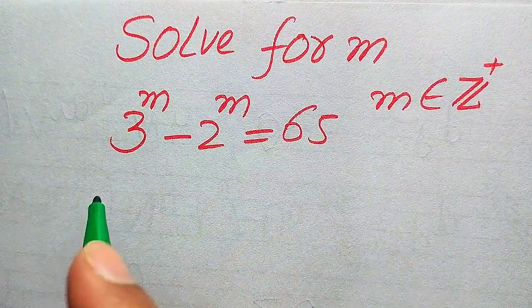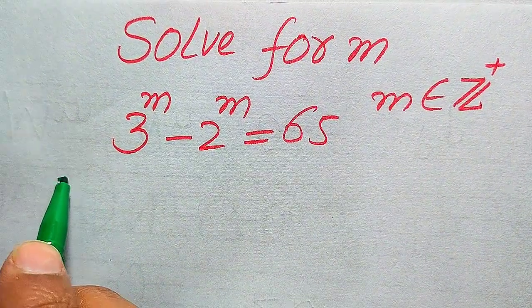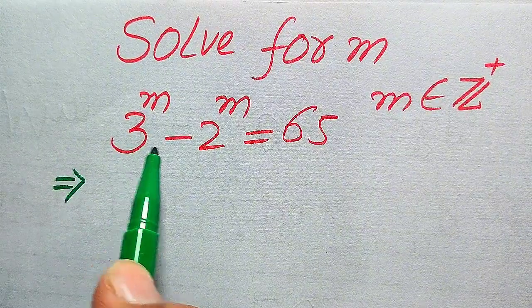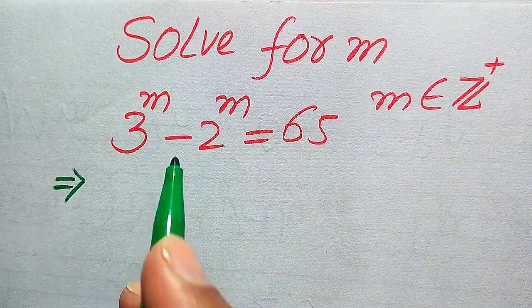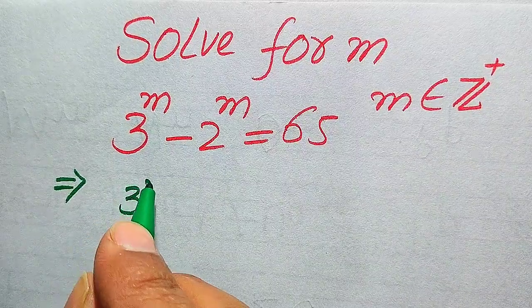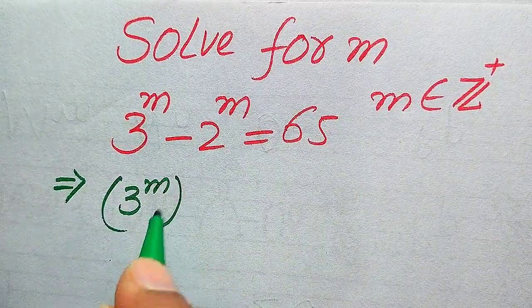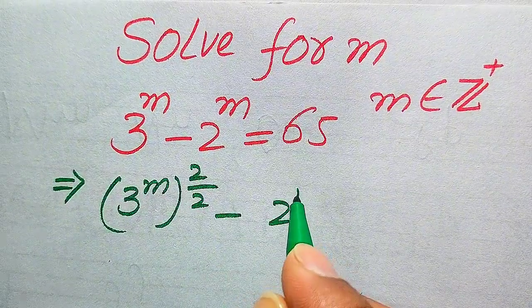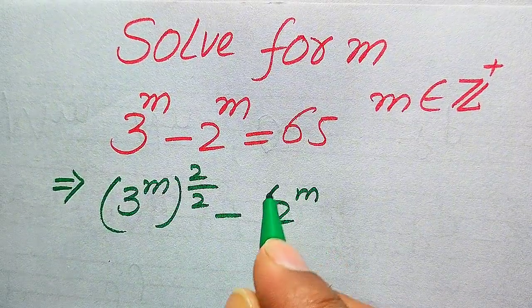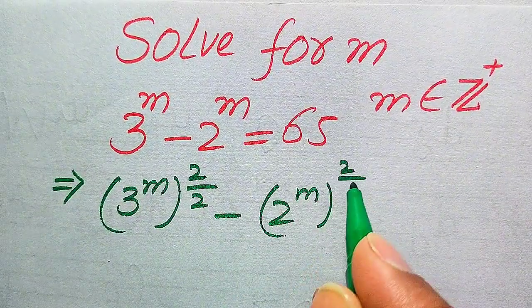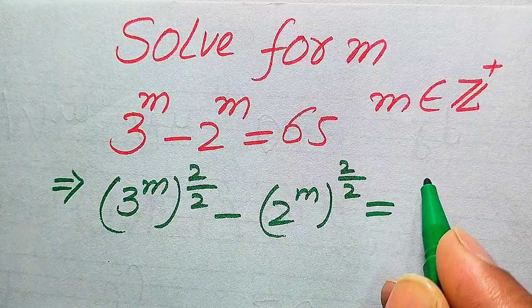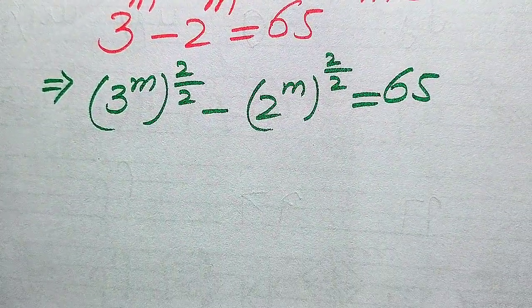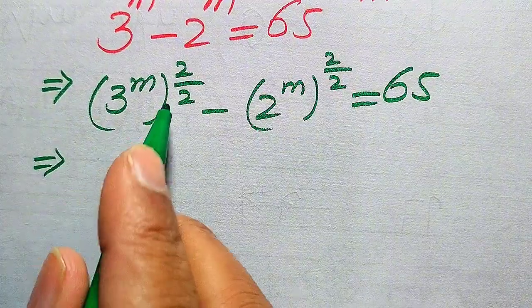The very first thing we are going to do is multiply and divide the exponent of both of these two terms by 2. It will be written as 3 to the power of m, whole exponent 2 divided by 2, minus 2 to the power of m, whole exponent 2 by 2, equals 65.